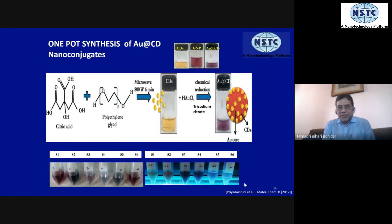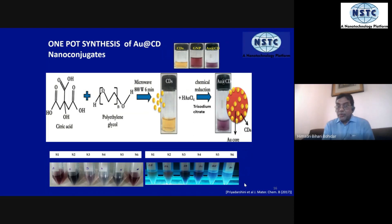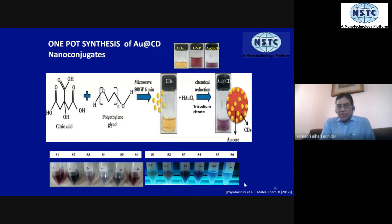Add some trisodium citrate as a reducing agent, because you have to reduce the gold salt to its elemental gold form. In Michael Faraday's experiment, they used starch — we can also use starch, glucose, or any other reducing agent. There is no need to specifically use trisodium citrate; you can use any readily available reducing chemical, such as glucose which is available cheaply.